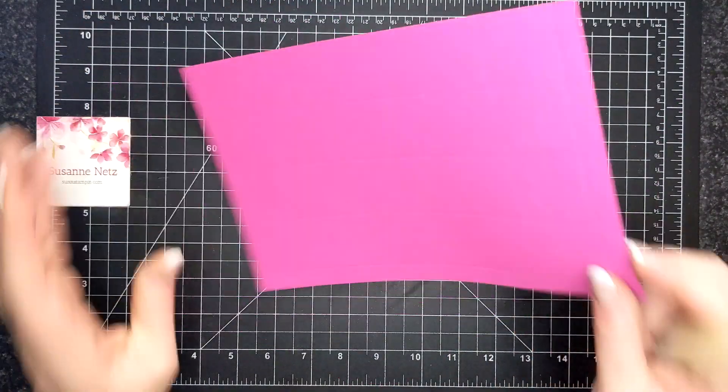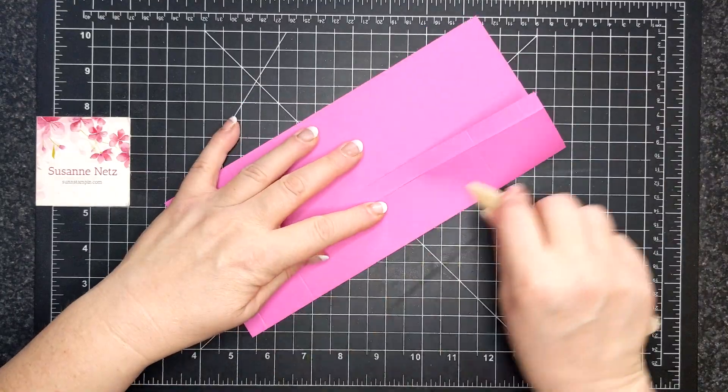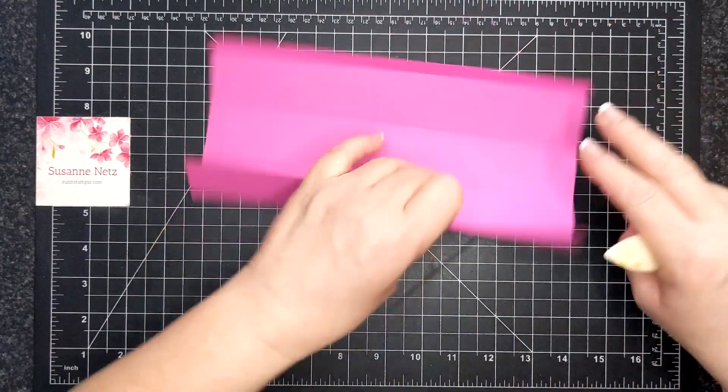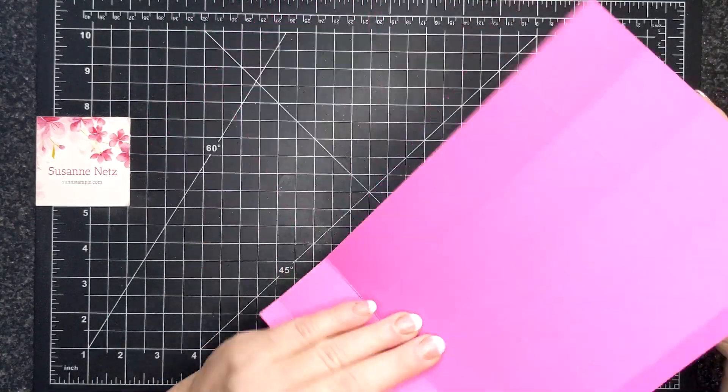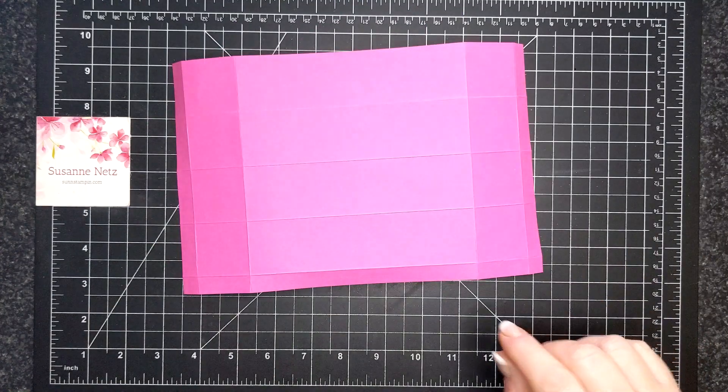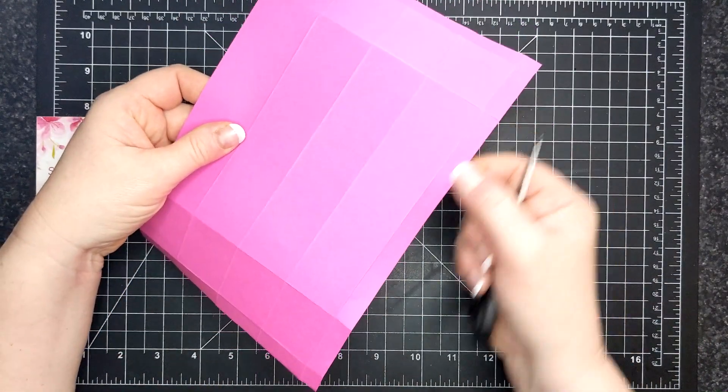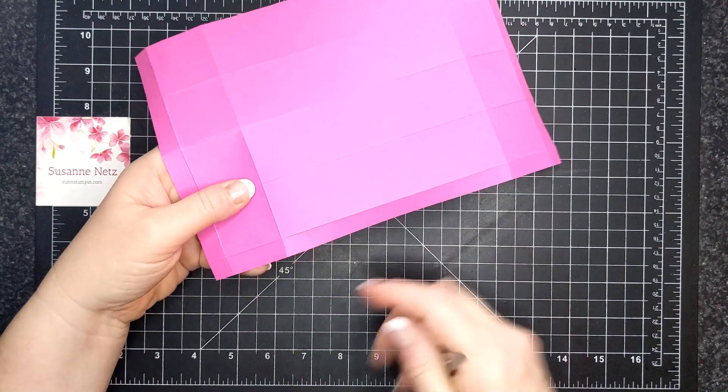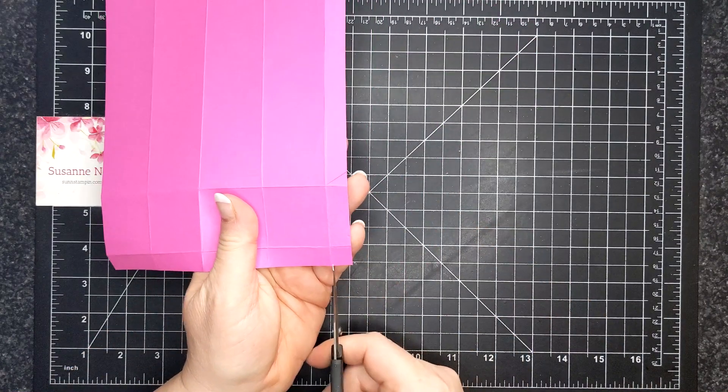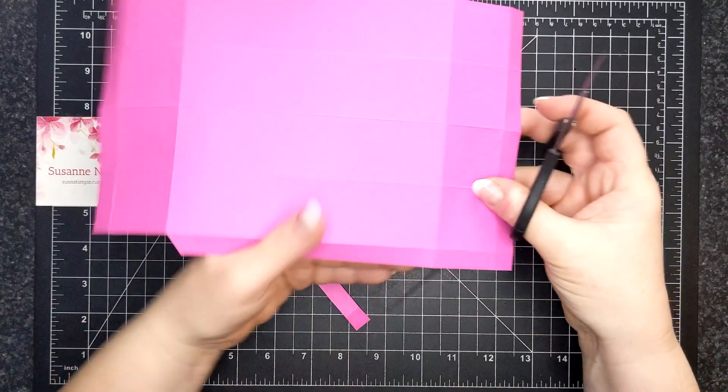Fold and burnish your score lines. Okay, I'm going to start on the side that we were going to put the adhesive on.